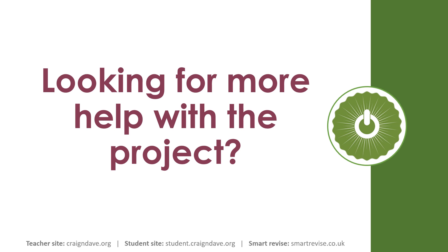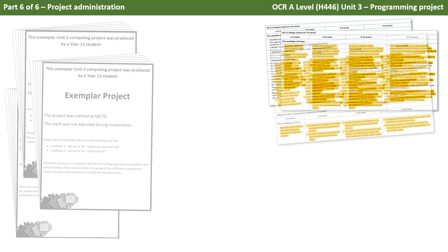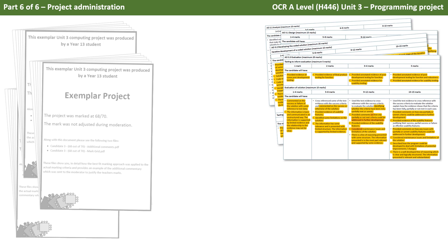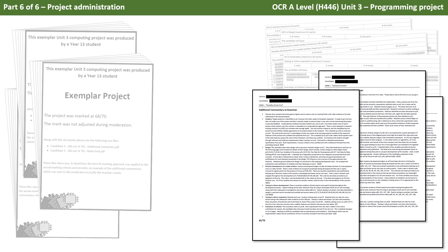Are you looking for more help or guidance with the project, either as a student not sure what to do or as a teacher delivering the project for the first time? With a Craig and Dave Premium Membership you'll get access to three exemplar projects — two graded at an A and one at an A-star — submitted by our candidates and approved by an exam board with marks not adjusted. Along with these projects we provide the marking grid we used, highlighting how we applied the marking criteria against each exemplar project, plus additional commentary to the examiner on how we found and applied the evidence against the mark scheme.